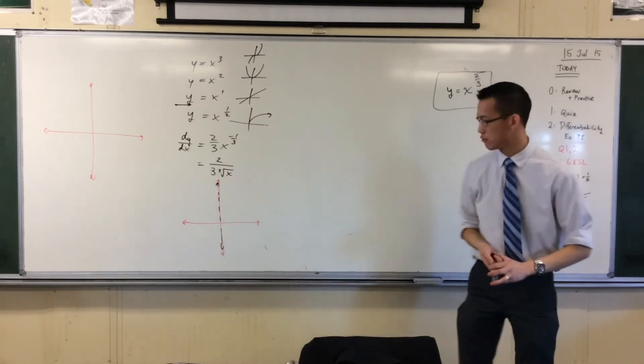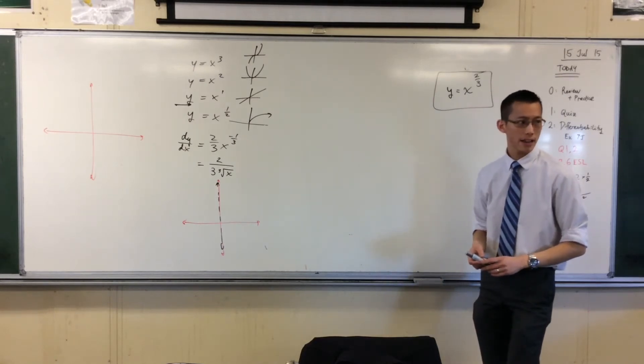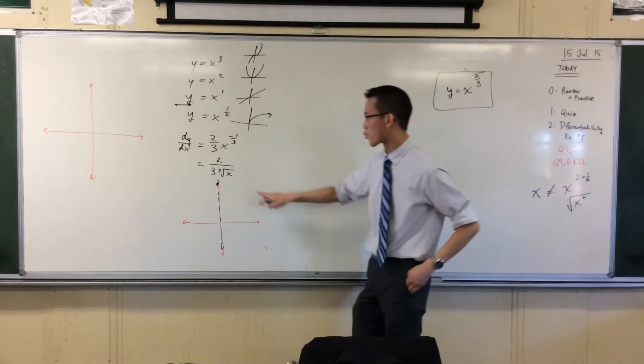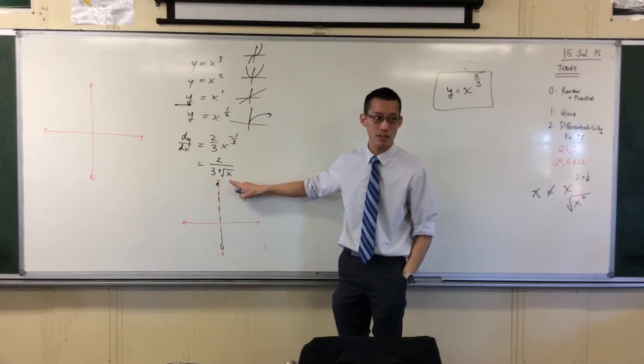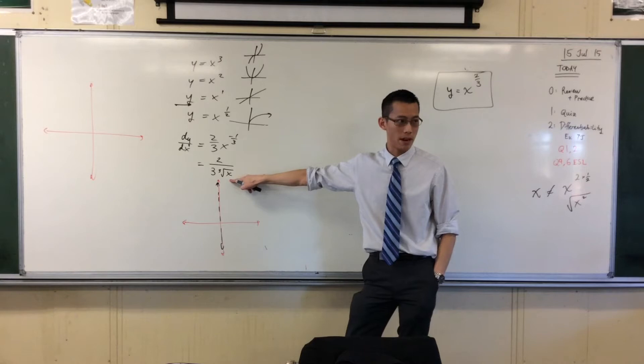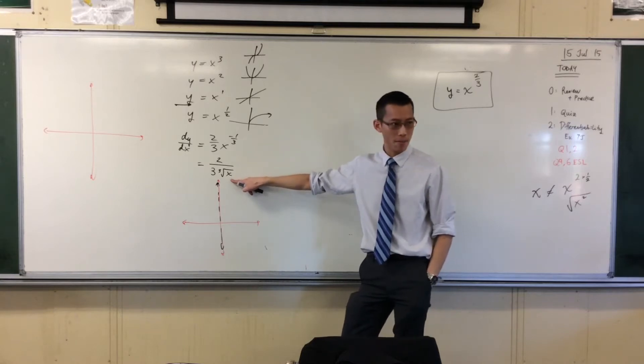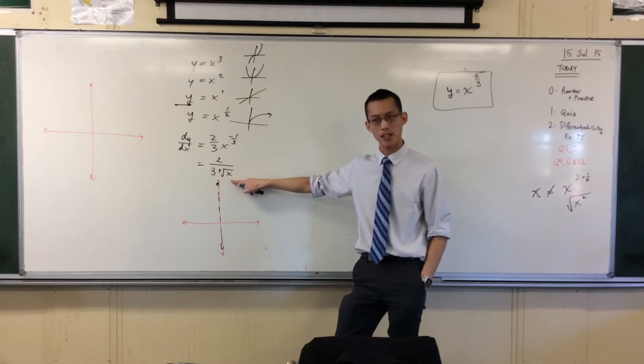But I can go everywhere else, right? I can go everywhere else. If I have a really, really small number here, okay, like close to zero, I can't get to zero, but I can get close to zero, right? If this is a very small number, then what will a cube root of a very, very small number be? It will also be small, right? Be also small.